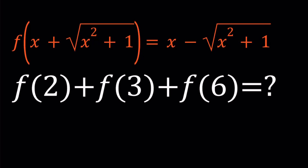Hello everyone. In this video, we're going to be dealing with a homemade function. We have f of x plus the square root of x squared plus 1 equals x minus the square root of x squared plus 1. And we're supposed to evaluate f of 2 plus f of 3 plus f of 6. I call this a homemade function because I kind of came up with the idea — these problems are easy to come up with. I'll be presenting two methods, so let's start with the first one.